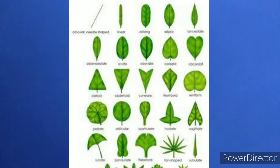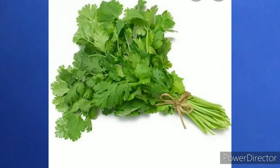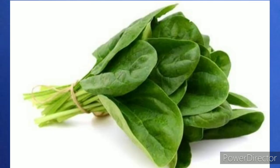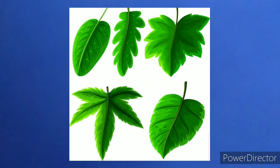Some leaves are used in the kitchen for cooking — which are those? Mint, coriander, curry leaves, spinach, etc. These are used in cooking because they give a nice smell to your food. And some leaves are used for healthy purposes, and some leaves are used as medicine as well.